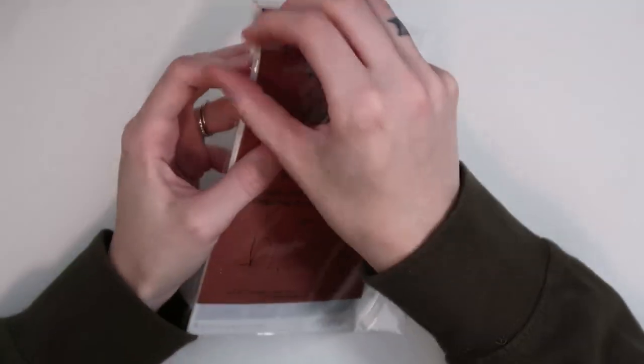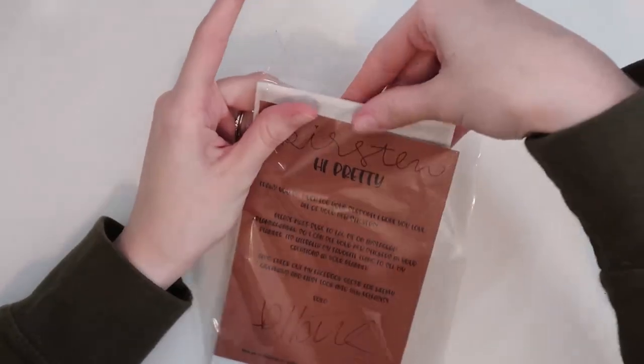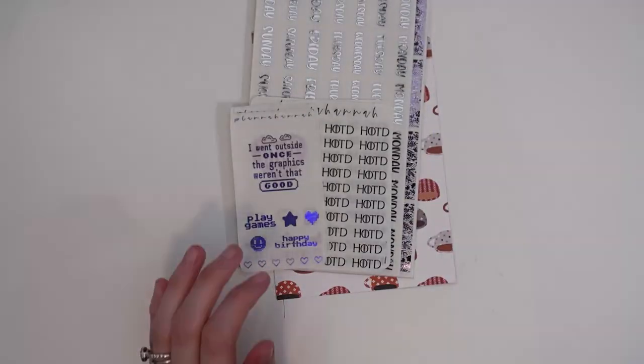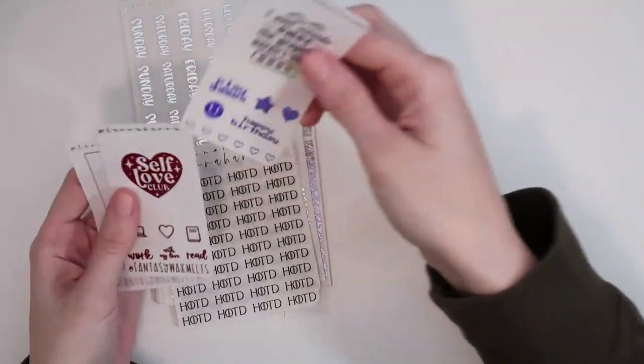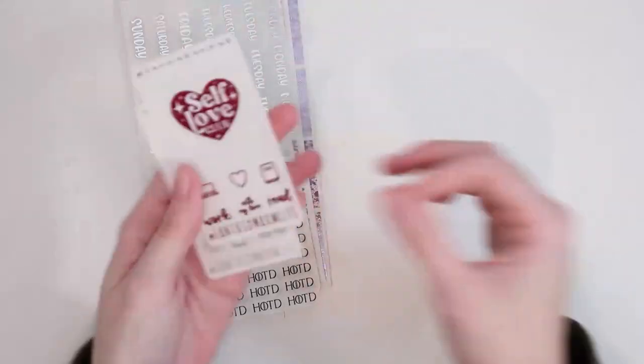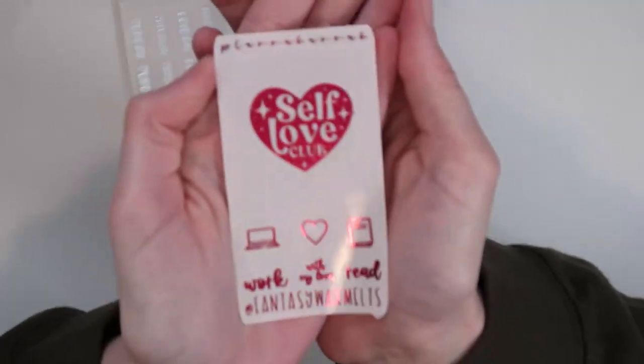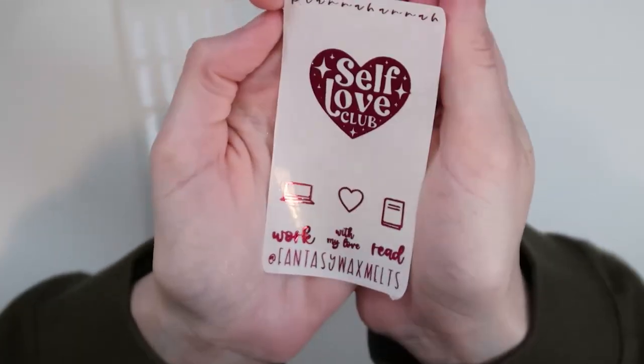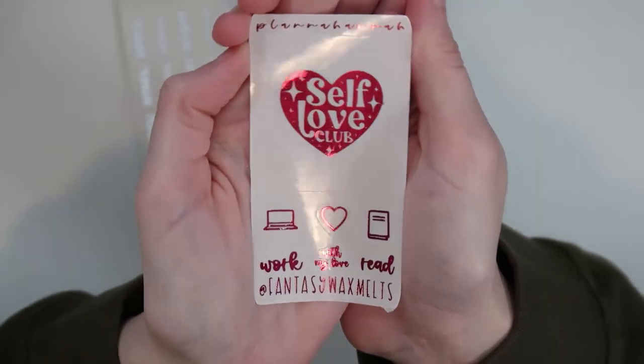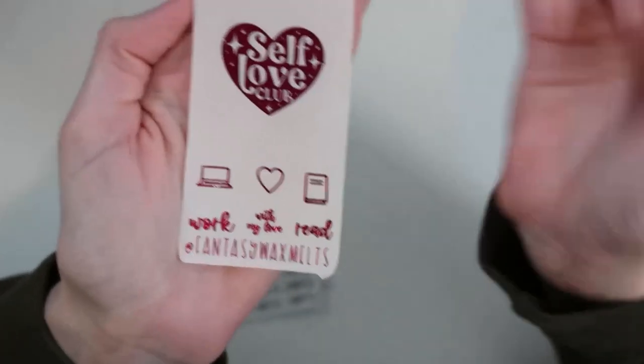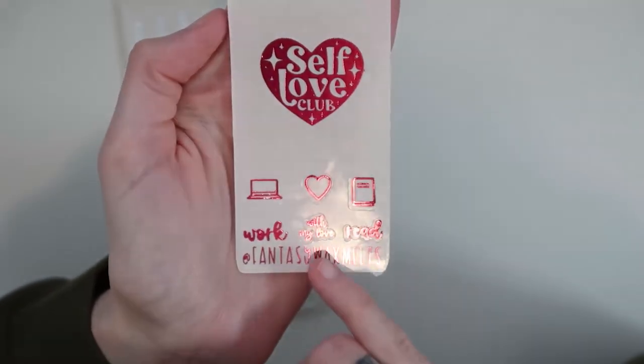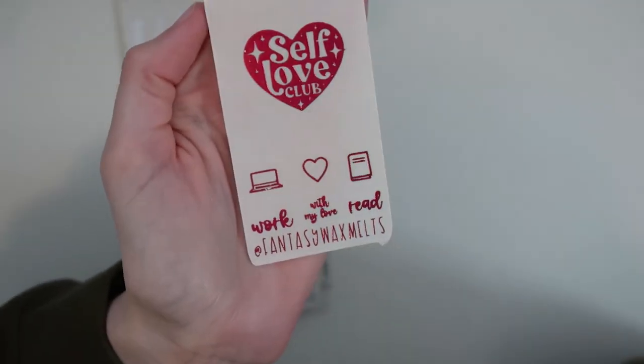Here's the second one. Okay so here is the journaling card with this order. And then I got that same freebie in the light polar bowl. I did get an extra one of my old freebies in silver. And then this is my new freebie. I'm obsessed. I think this is in her medium pink, mid pink. Self Love Club is the overlay. I have a laptop heart and book icon. Work with my love and read. So if you use the code fantasy 15, you'll save 15% and get that freebie.